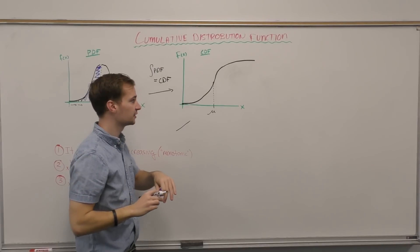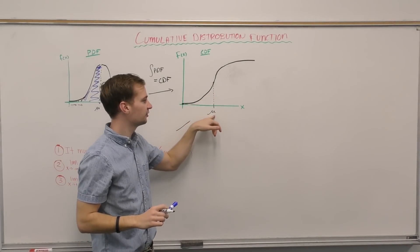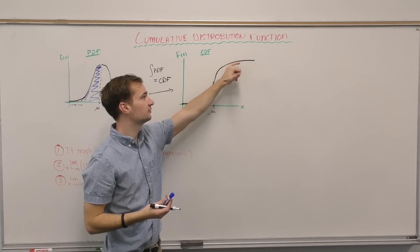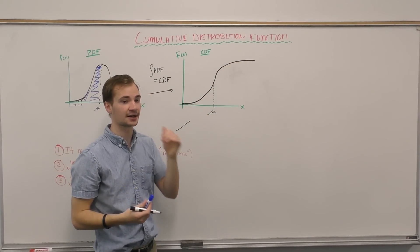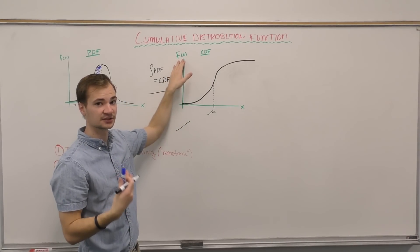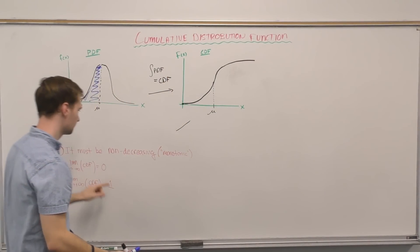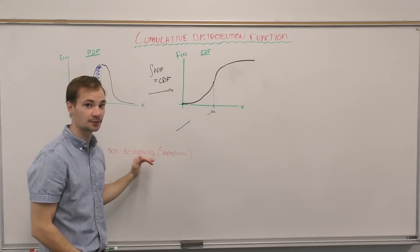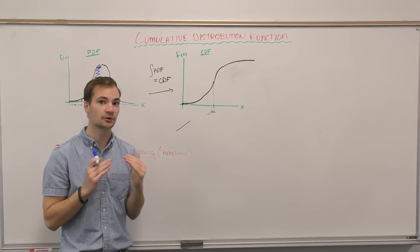Now we see that on here. We're increasing until we hit the mean, the most likely value, and then we're decreasing the area that we add. Now, terminology-wise, our CDF is still increasing. Remember, it must always be non-decreasing. It must always either stay the same or increase.